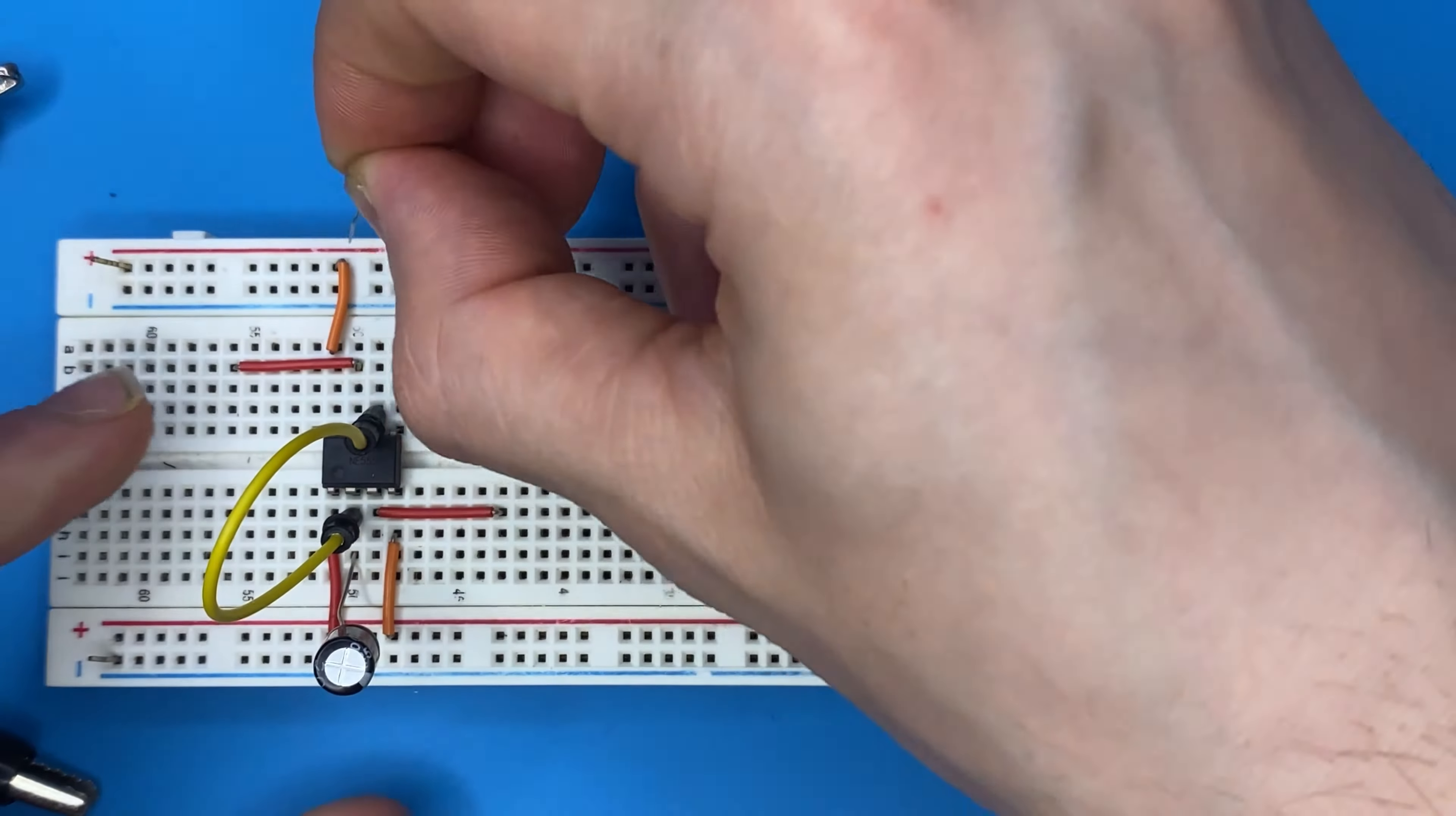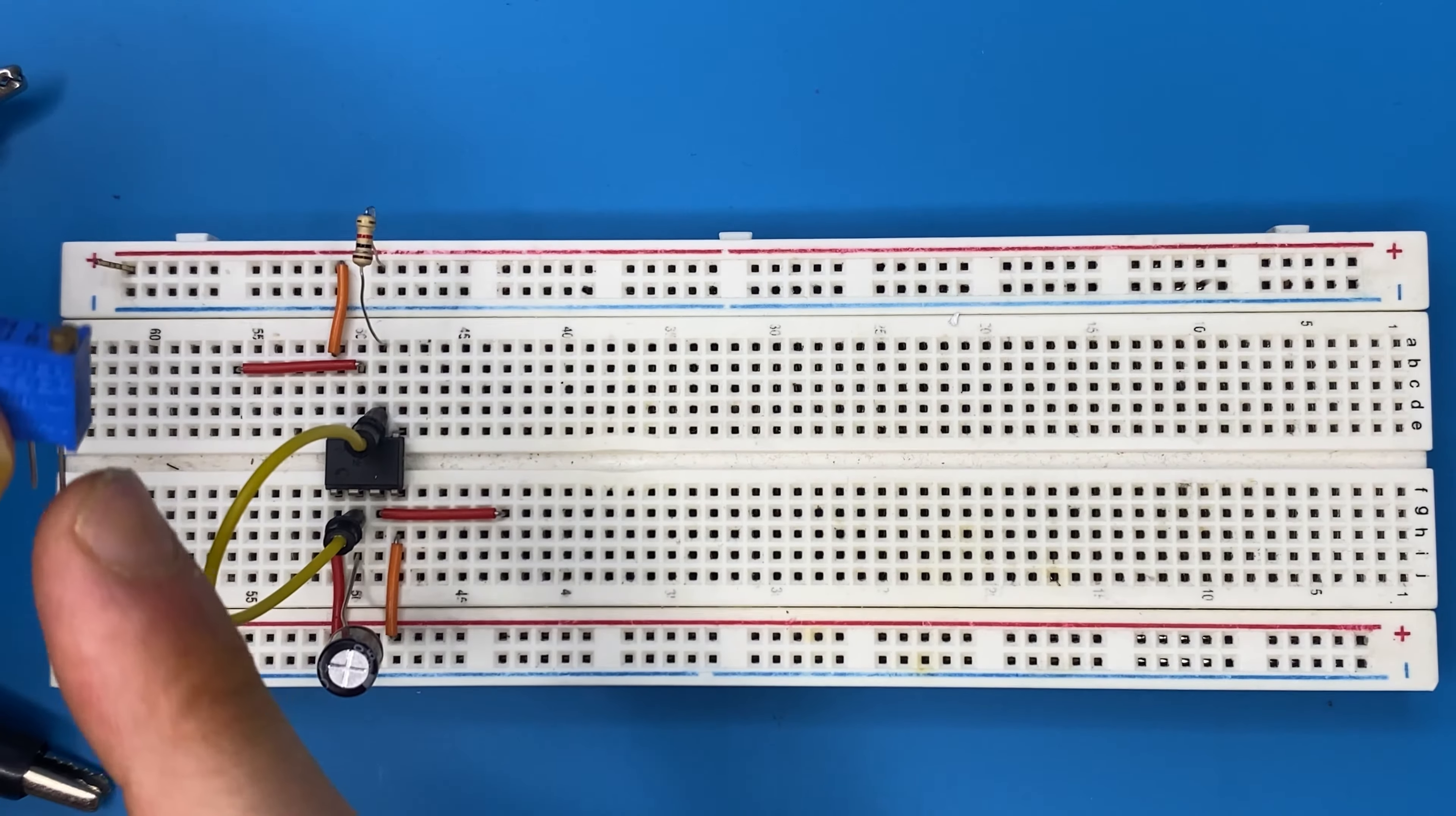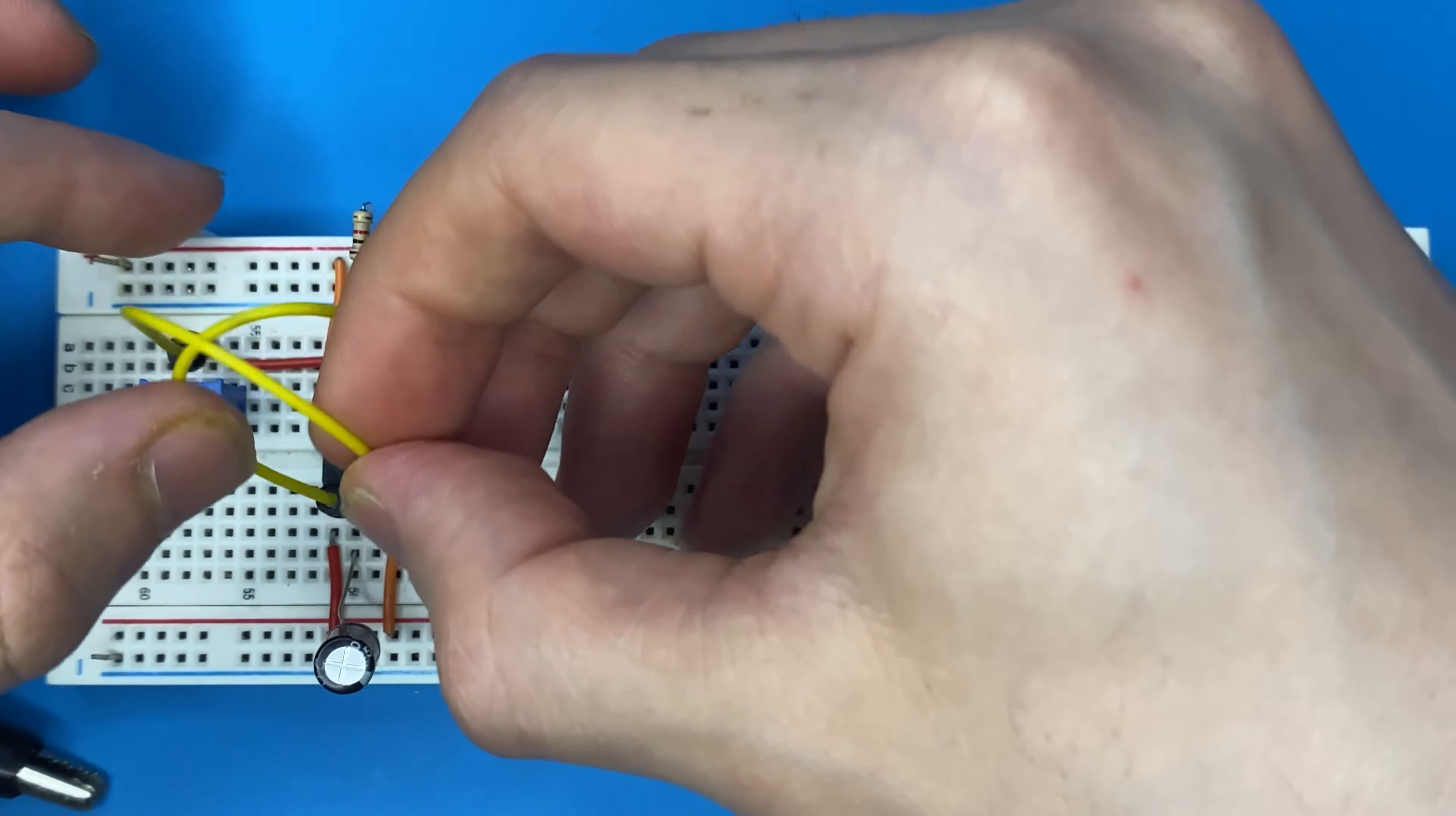Connect the 1k ohm resistor to the power and to pin 7 of the IC. Let's connect our potentiometer—the VCC pin of the potentiometer is going to be connected to pin 7, and let's connect the middle pin of the potentiometer to pin 2 of the IC.